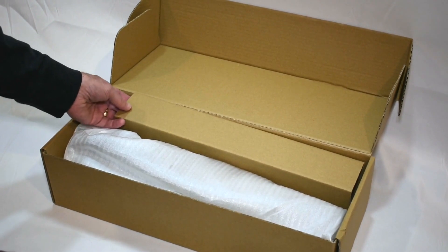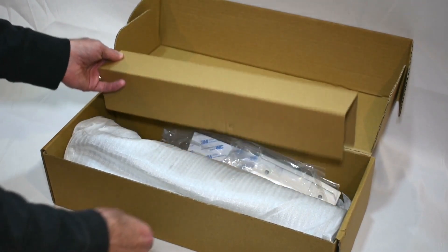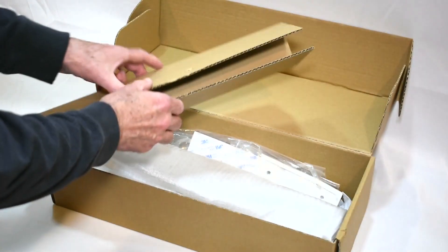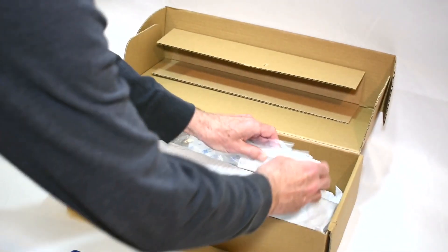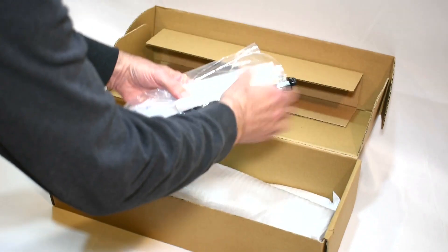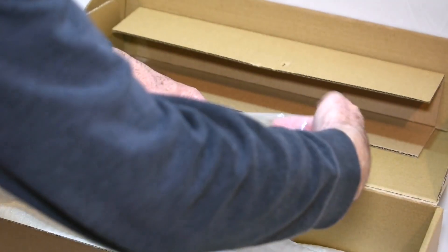There's a triangular insert in here just to keep the gauge from rattling around and rubbing on other parts, but underneath that triangular piece of cardboard will be a bag of hardware and other supplies.